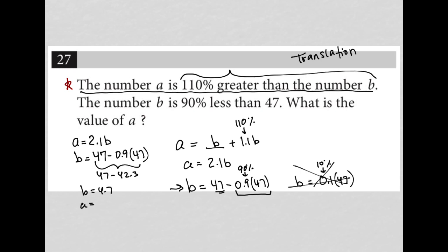Now if A is 2.1 times B, that makes it 2.1 times 4.7. When I do the math in my calculator, I get that A is equal to 9.87. So there is our answer for A.